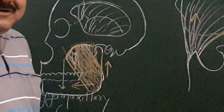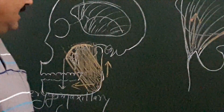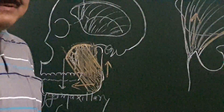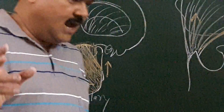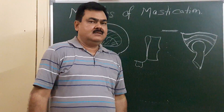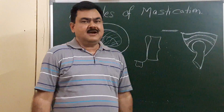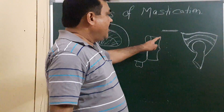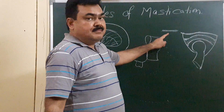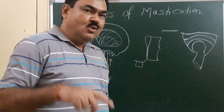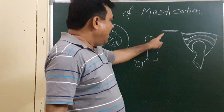Now we will discuss the medial and lateral pterygoid muscles. For the lateral pterygoid muscle: it has two heads — an upper head and a lower head.